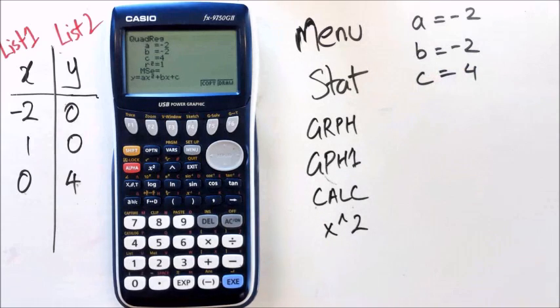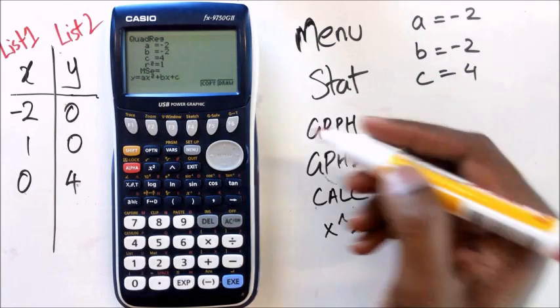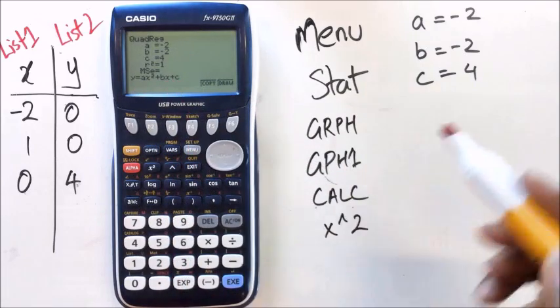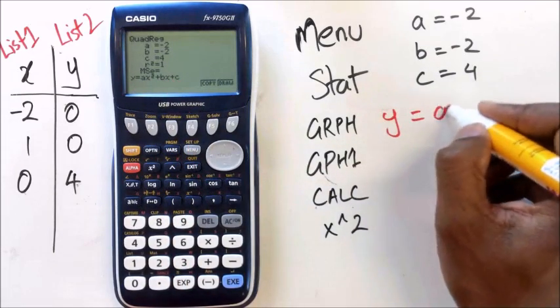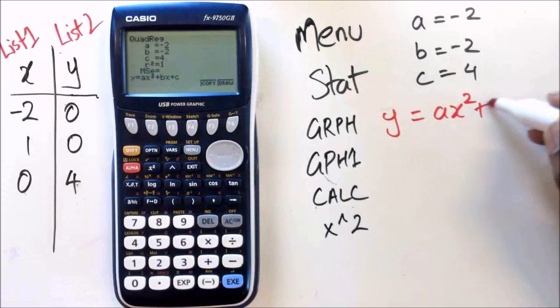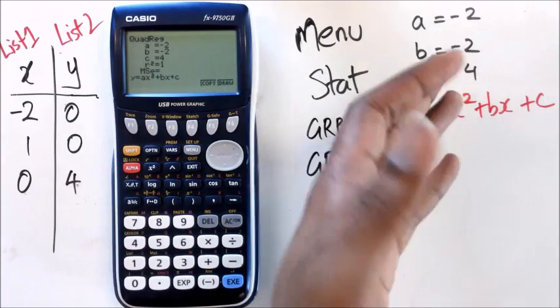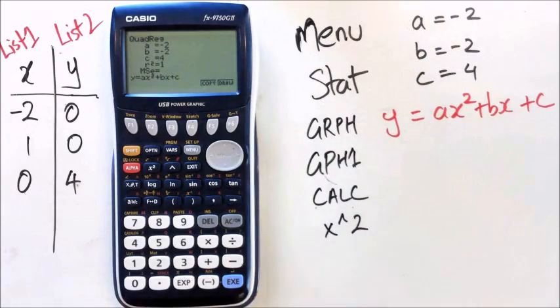Now, if just in case you've forgotten the general form for a quadratic, it's actually given here. Can you see how it says y equals AX squared plus BX plus C? So you write that down, y equals AX squared plus BX plus C. And a few people, what they do is they kind of forget to put A, B, C into the equation.